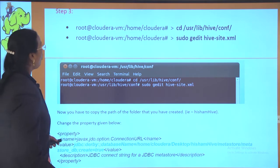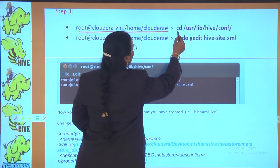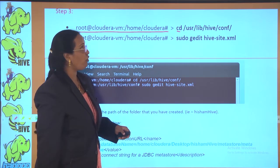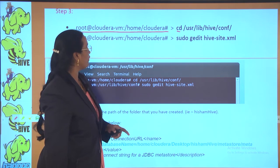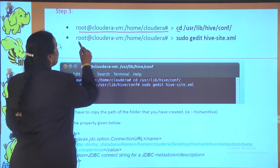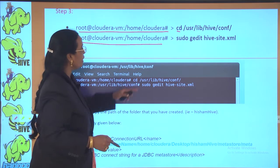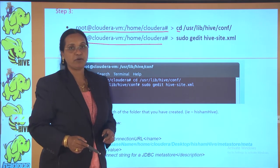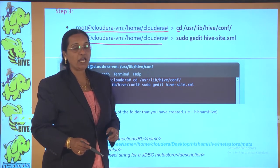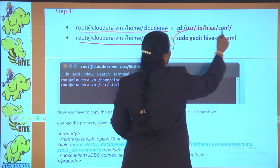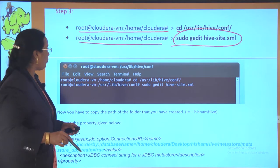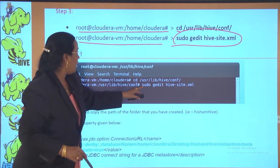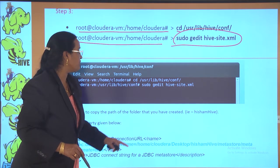Step three: from the root location, use the command 'cd /usr/lib/hive/conf' to navigate to the config folder. Once you get to that path, type 'sudo gedit hive-site.xml' to open the Hive configuration file.